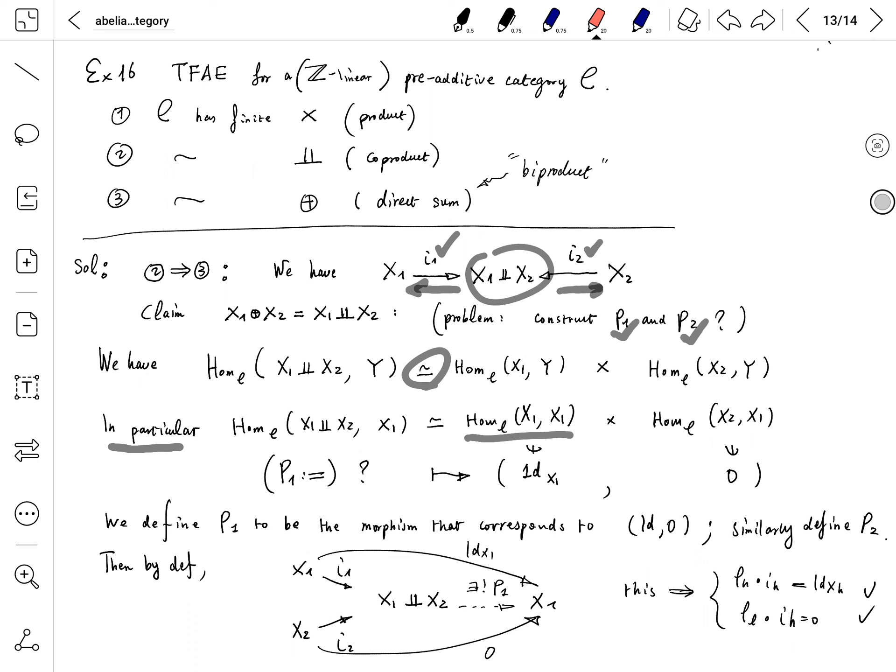Identity X1 exists by definition of a category. And because this is a Z-module, or hom-set in particular, you have a zero element in this group. So this isomorphism tells us that on the left-hand side, there should exist a morphism from coproduct to X1 which corresponds to this identity and zero.